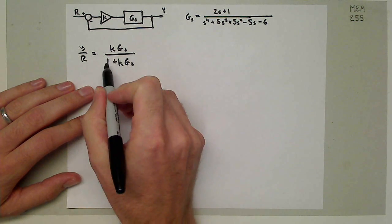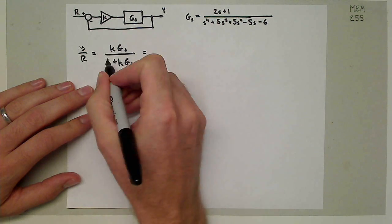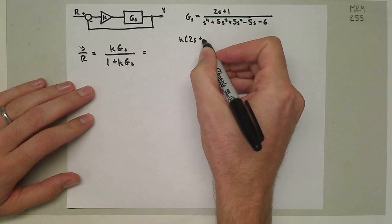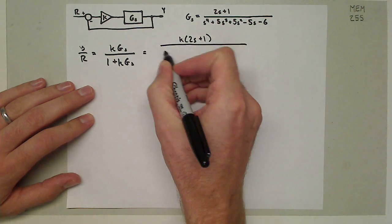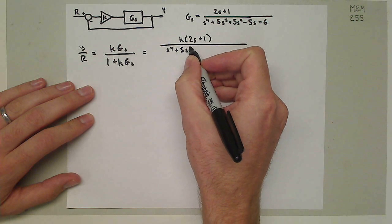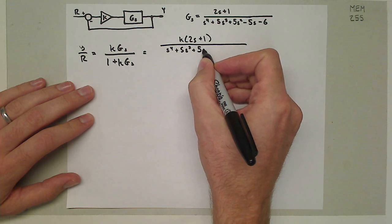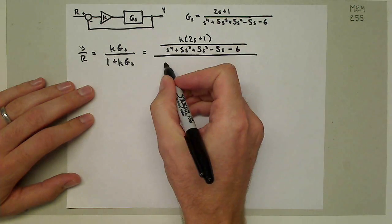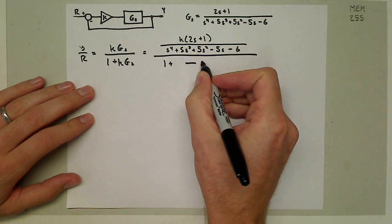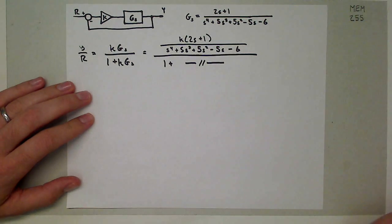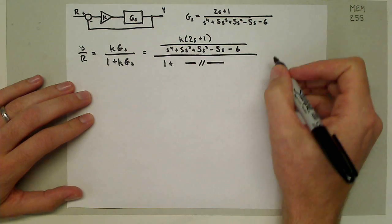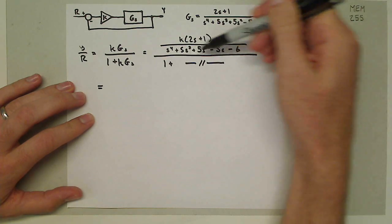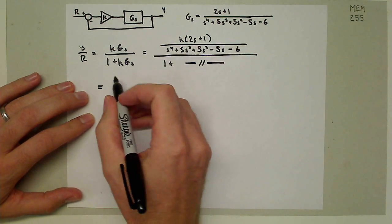All we really care about is the poles of the transfer function, but we'll write it all down anyway. That's going to be K times 2s plus 1 over s^4 + 5s^3 + 5s^2 - 5s - 6 over 1 plus that same item. This is simplifiable by multiplying the top and the bottom by the denominator of G of s.